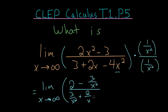And now we have minus 4x squared times 1 over x squared. The x squareds cancel and we're left with minus 4.